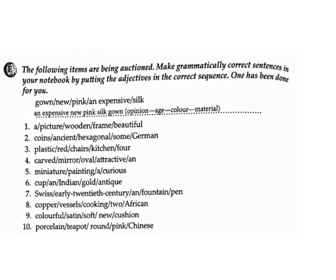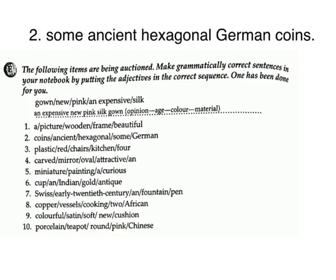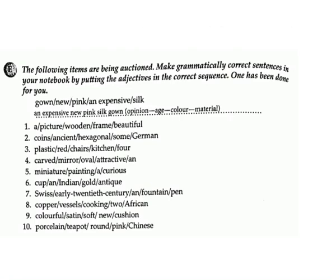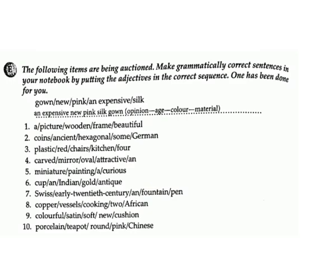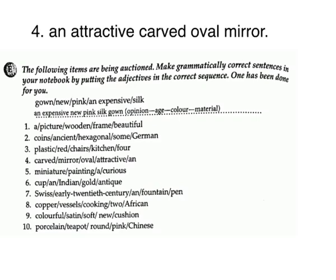2. 'coins — ancient, hexagonal, some, German.' Answer: some ancient hexagonal German coins. 3. 'plastic red chairs kitchen four.' Answer: four red plastic kitchen chairs. 4. 'carved mirror oval attractive an.' Answer: an attractive carved oval mirror.